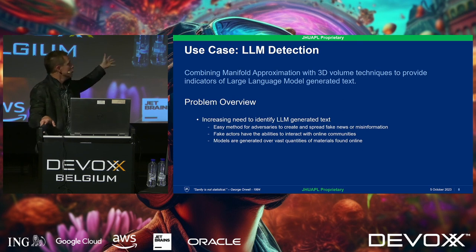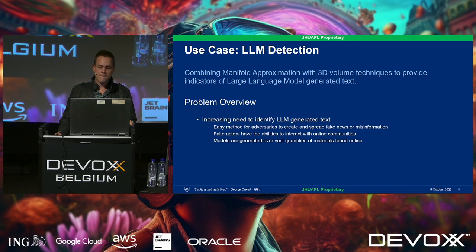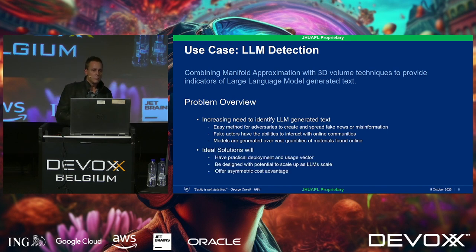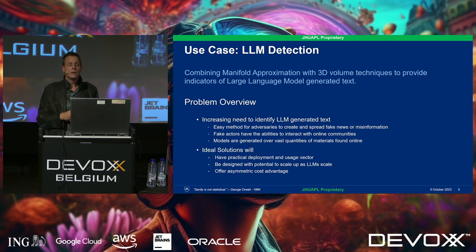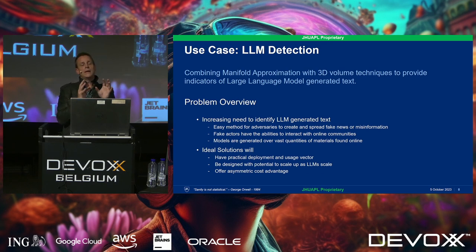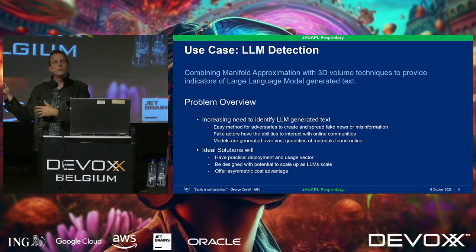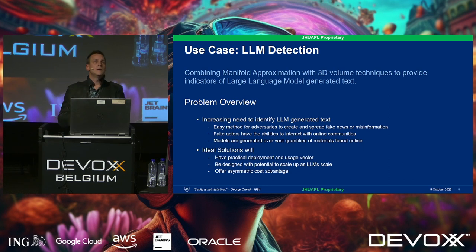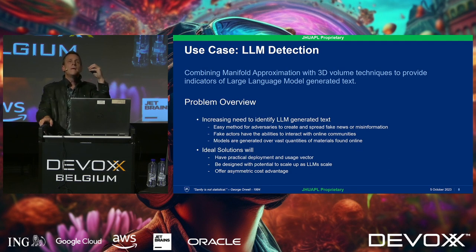These newer models have been trained on vast quantities of material, making them very good at what they do. Any solution we put forth really needs to be practical and designed to scale. A lot of solutions kind of work today, but what about when the next model comes out? We need something that scales up. The solution cannot focus on the output of the model itself as its sole method — if all you're doing is looking at the text produced by the model, you can't win. It's only going to get worse as these models get better.